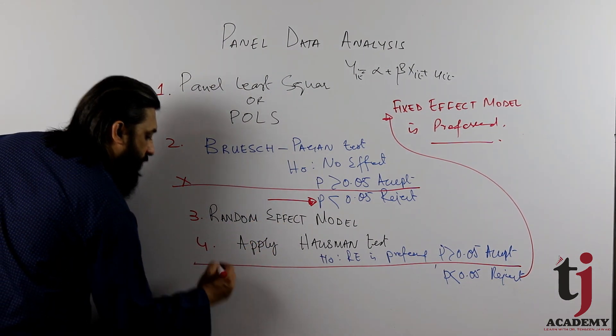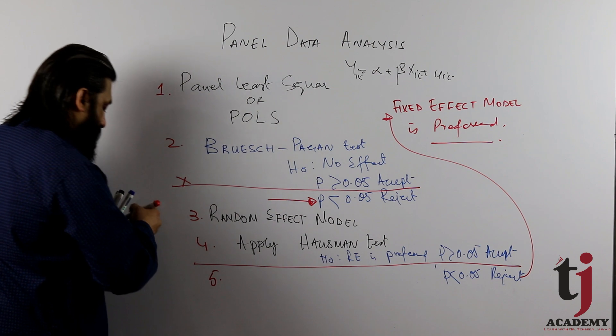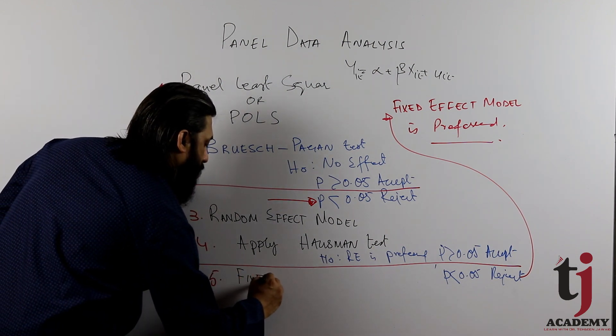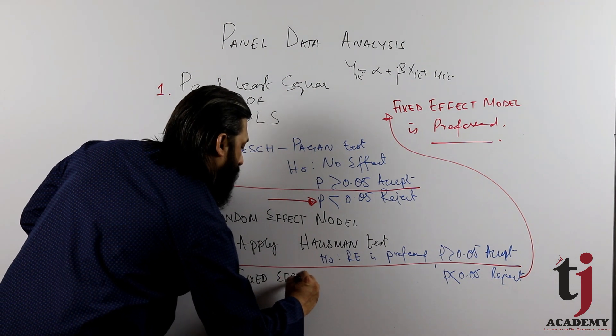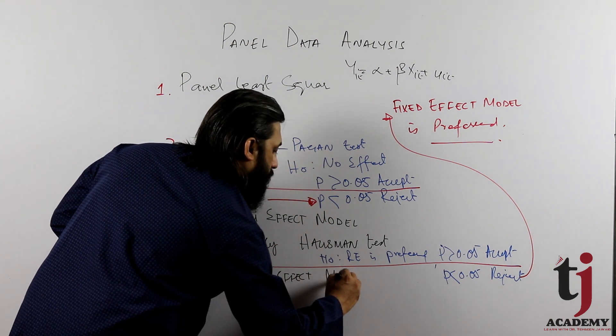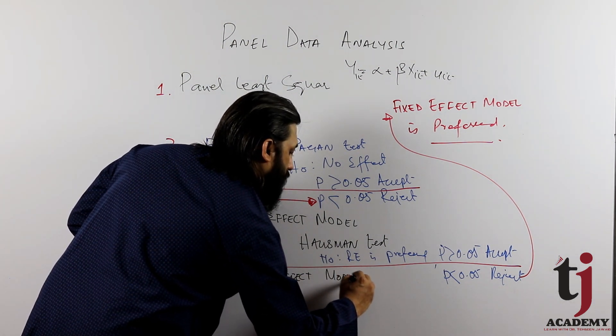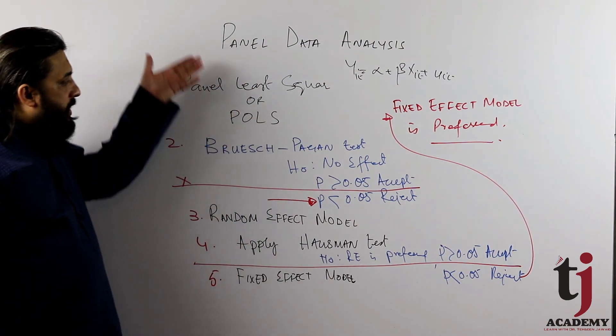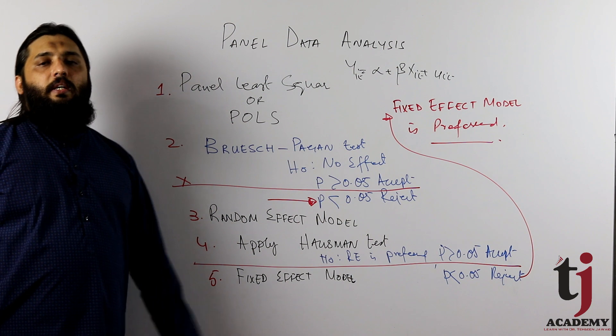If it, then step number 5, run. Run fixed effect model. So you have fixed effect model. So you have some procedure sequence which estimate.